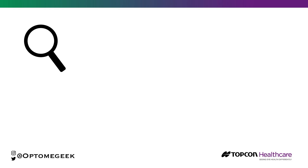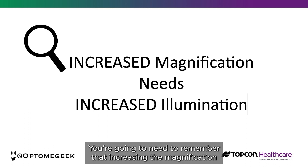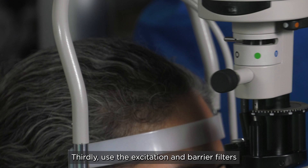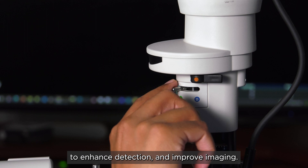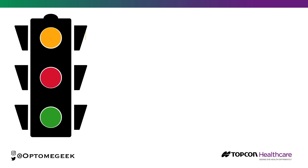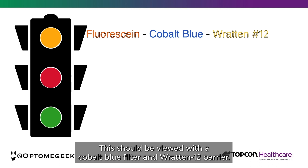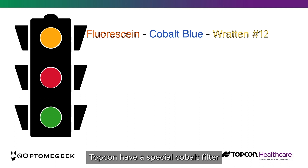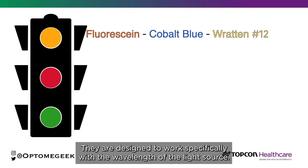Secondly, changing magnification — you are going to need to remember that increasing the magnification will need increased illumination. Thirdly, use the excitation and barrier filters to enhance detection and improve imaging. The three main ones we use are sodium fluorescein, which should be viewed with a cobalt blue filter and Wratten 12 barrier. Topcon have a special cobalt filter that is a bit turquoisey and a special barrier filter, designed to work specifically with the wavelength of the light source.